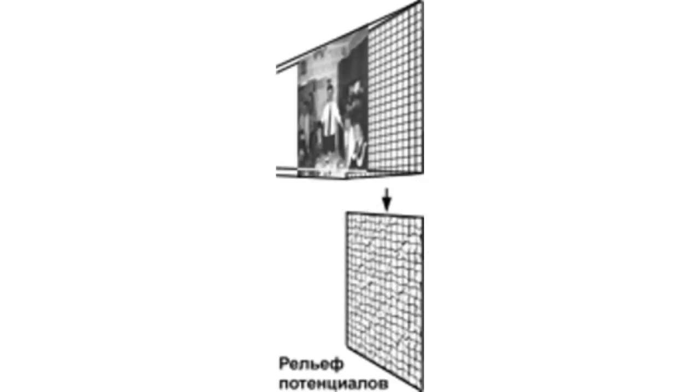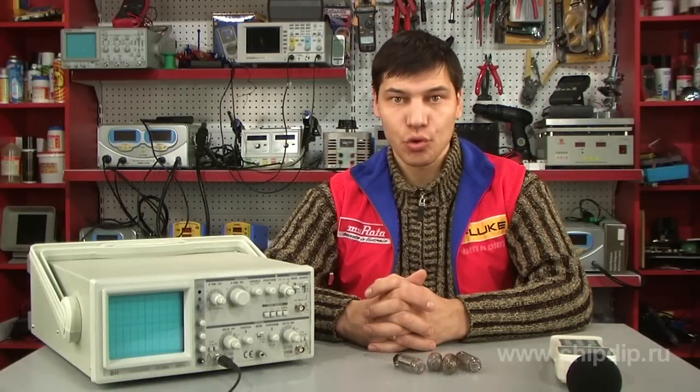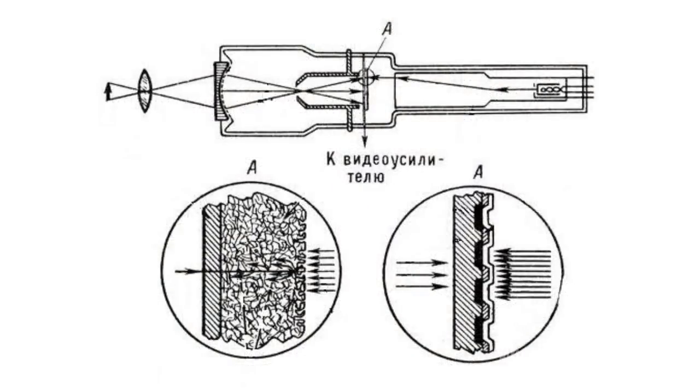An electron beam formed and deviated with magnetic and electrostatic fields picks up these charges. There are a lot of various constructions of Vidikon targets. Some targets have two or three layers, and some have a mosaic structure with smooth and sponge layers.